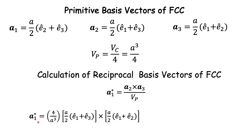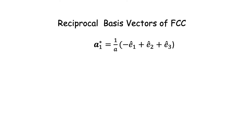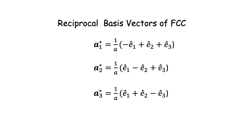1/Vp is 4/a³, and we substitute for A2 and A3 in the cross product. Pause the video here, take a minute or two to write this out and solve. Once you do that, you will find it is a very simple expression: A1* = (1/a)(−e1 + e2 + e3). Similar calculations for A2* and A3* give: A2* = (1/a)(e1 − e2 + e3) and A3* = (1/a)(e1 + e2 − e3). These are very symmetric — in A1* e1 is negative, in A2* e2 is negative, and in A3* e3 is negative.